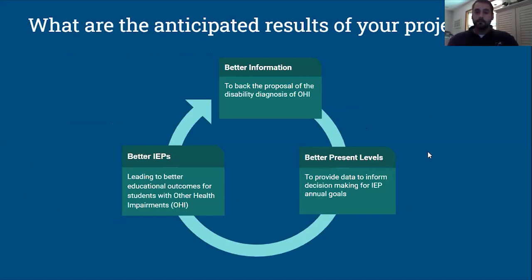The anticipated outcome of my project is that we gain better information and data — all the things we need in order to fill in the present level. This will back the proposal of the disability diagnosis of OHI. Through this project, we hope to point the educator to the specific places where the data comes from and what data they need, so they can have better information to use, which will lead to better present levels. The data we get will help inform decision-making for the development of the IEP and the annual goals for that student.